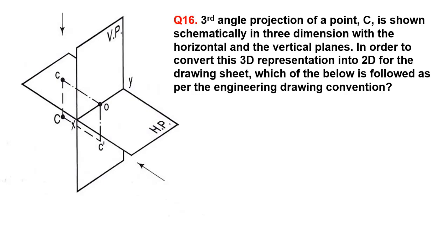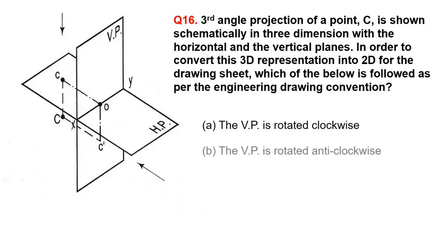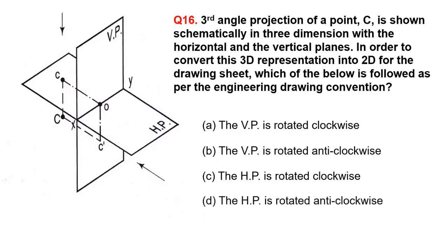Third angle projection of point C is shown schematically in three dimensions with the horizontal and vertical planes. In order to convert this 3D representation into 2D for the drawing sheet, which of the below is followed as per engineering drawing convention? A. The VP is rotated clockwise, B. The VP is rotated anticlockwise, C. The HP is rotated clockwise, D. The HP is rotated anticlockwise.